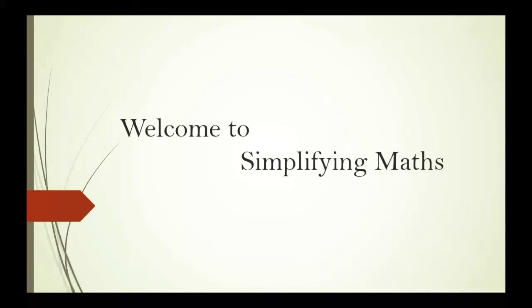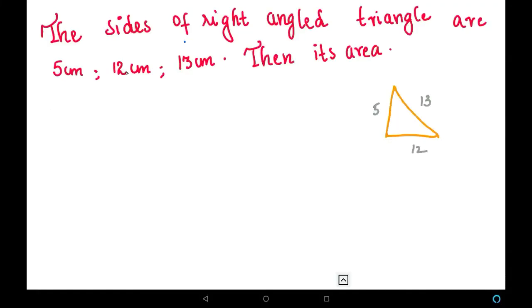Friends, welcome to Simplifying Maths. In this video, we are going to solve a problem: the sides of a right angle triangle are 5 centimeters, 12 centimeters, and 13 centimeters. Find its area.